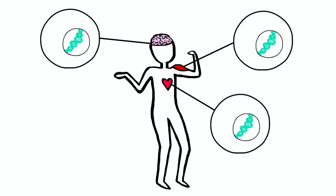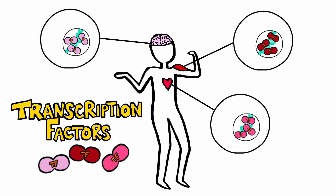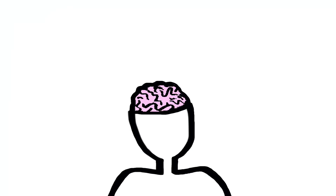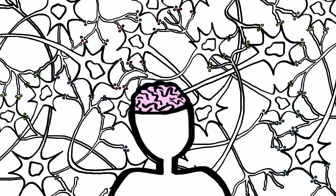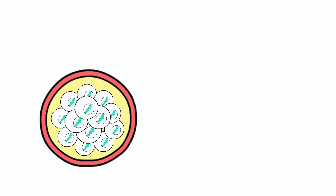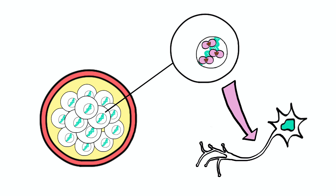So now we can answer the question of what makes cells different: they have different transcription factors, and therefore different genes switched on. For example, neuronal cells in the brain switch on genes that instruct production of neurotransmitter molecules to pass signals between them. But what causes an unspecified stem cell in the embryo to have a particular set of transcription factors to make it into a neuron rather than another cell type?